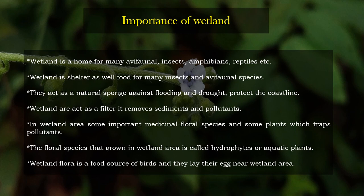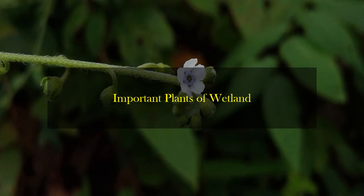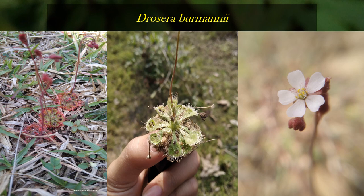Wetland flora is a food source for birds, and they lay their eggs near the wetland area. Now, important wetland plants. First is Drosera Barmani. It is a carnivorous plant, which means it can eat insects.